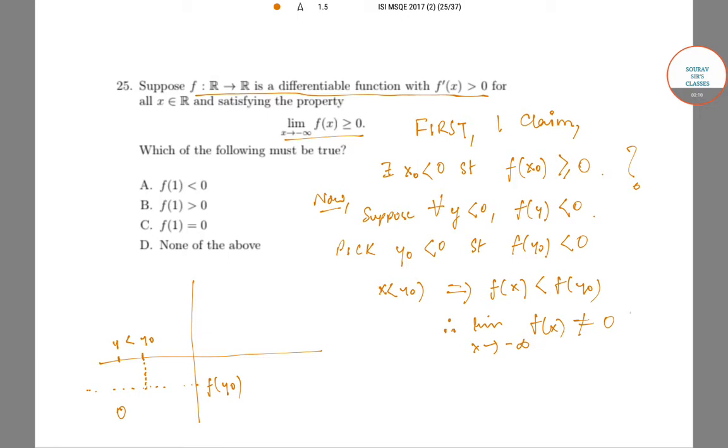So our assumption was wrong, our claim was right. There exists some x₀ < 0 such that f(x₀) ≥ 0.